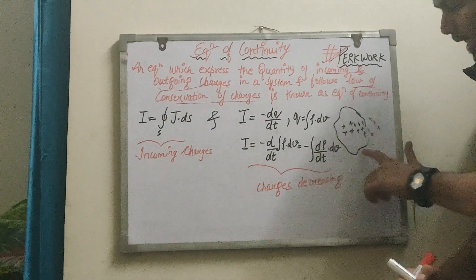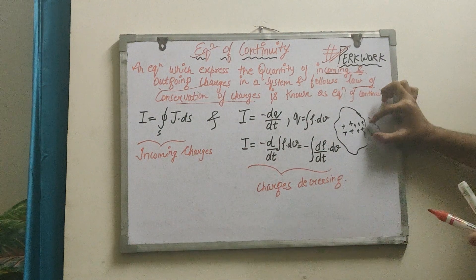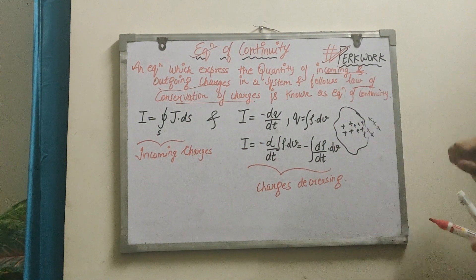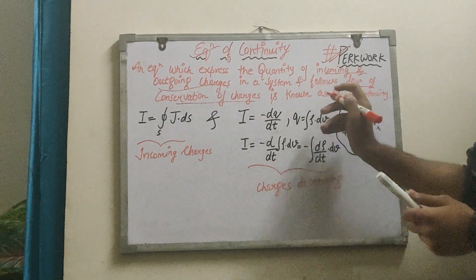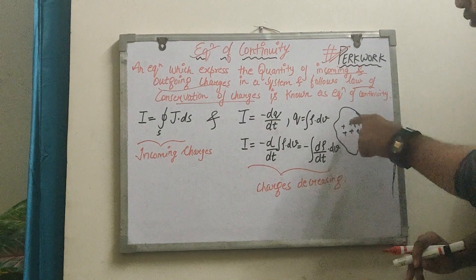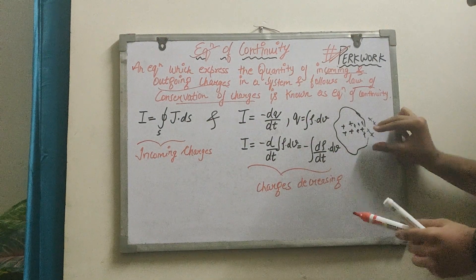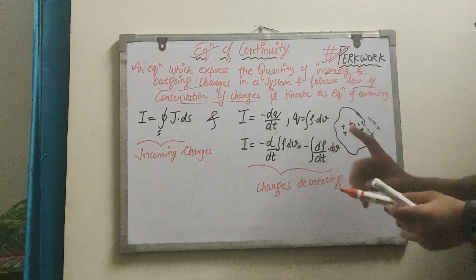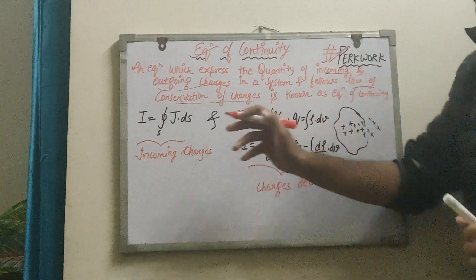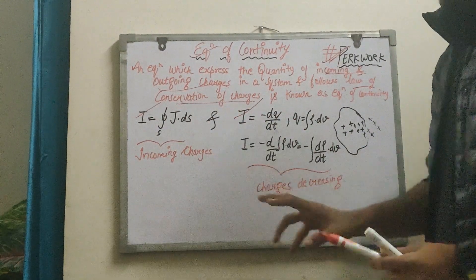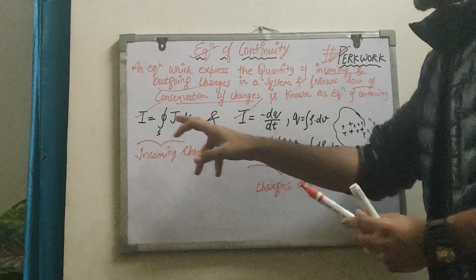We have a system that has charges. When charge leaves the system, we have to account for the charges in the back of this volume. The amount of charges will decrease — that is the law of conservation of charge. The charge is conserved; the amount of charge that goes out means the amount of charge will be less within the volume. The second thing is incoming and outgoing charges.